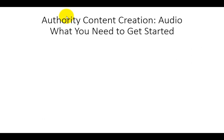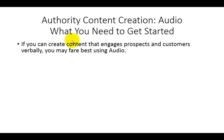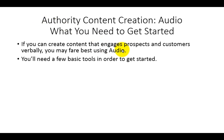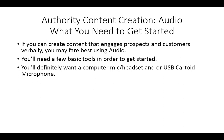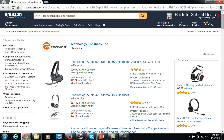Welcome back to Alternative Authority Content. In this video, we're going to be talking about what you'll need to get started in order to create audio. If you can create content that engages prospects and customers verbally, you may fare better than writing if you decide to use audio for your content creation. You are going to need a few basic tools in order to get started using audio. You'll definitely want a computer mic and headset and/or a USB cardioid microphone. These items do not have to be super expensive — if you do a simple search on Amazon, you'll notice the Plantronics audio headset, which is just fine for creating audio using your personal computer.